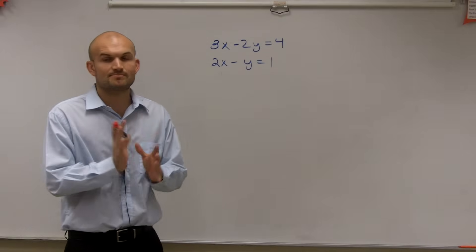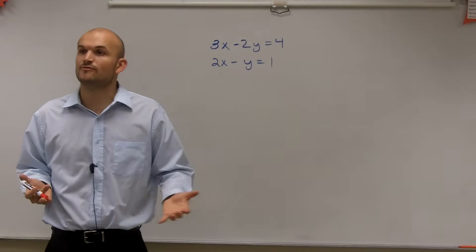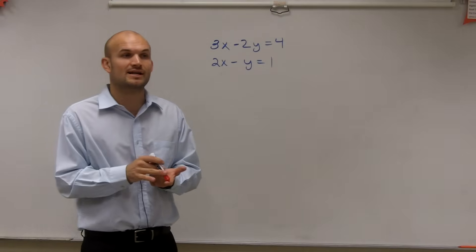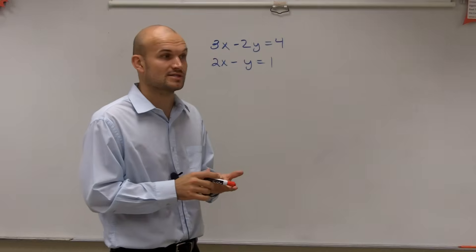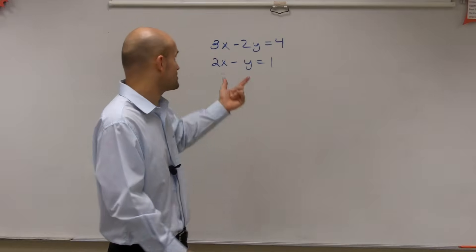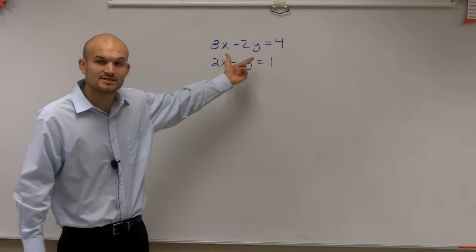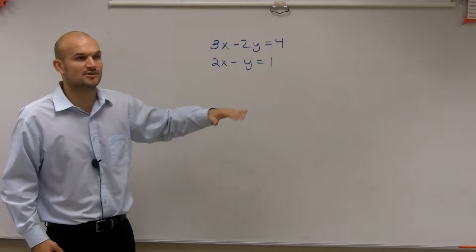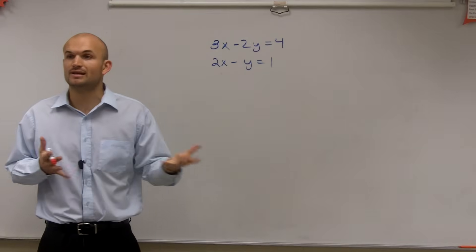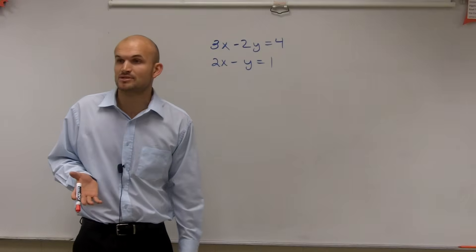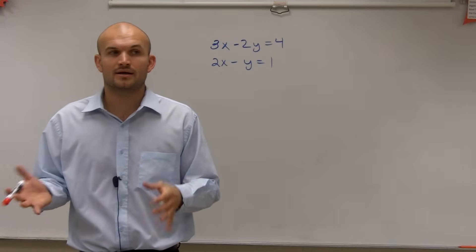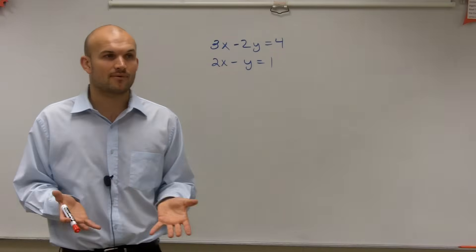Ladies and gentlemen, remember we talked about two different ways to graph lines. One, we talked about finding our x and y intercepts, especially when you have a problem in standard form. And then we also talked about putting it in y equals mx plus b form, our slope-intercept form, and graphing it that way.